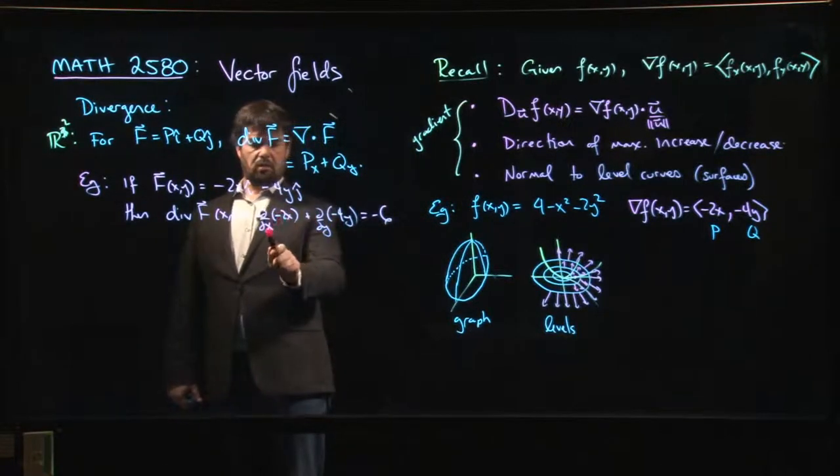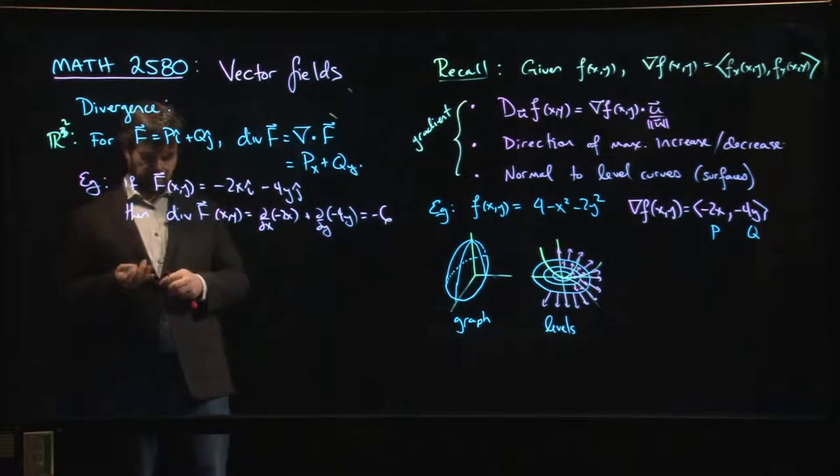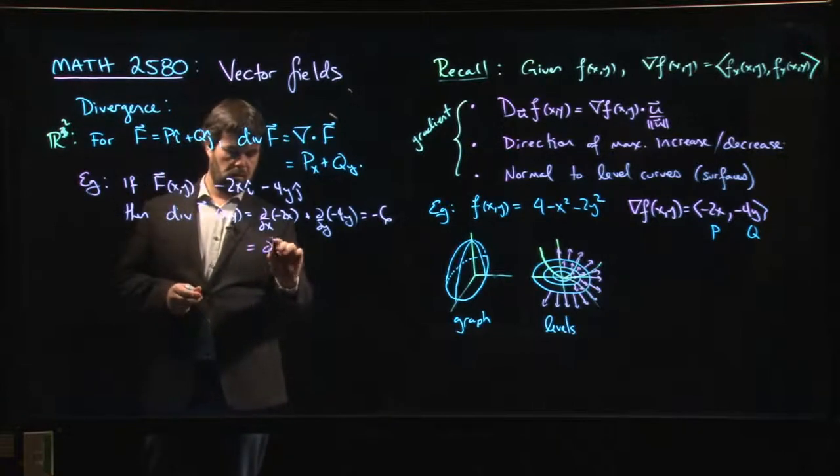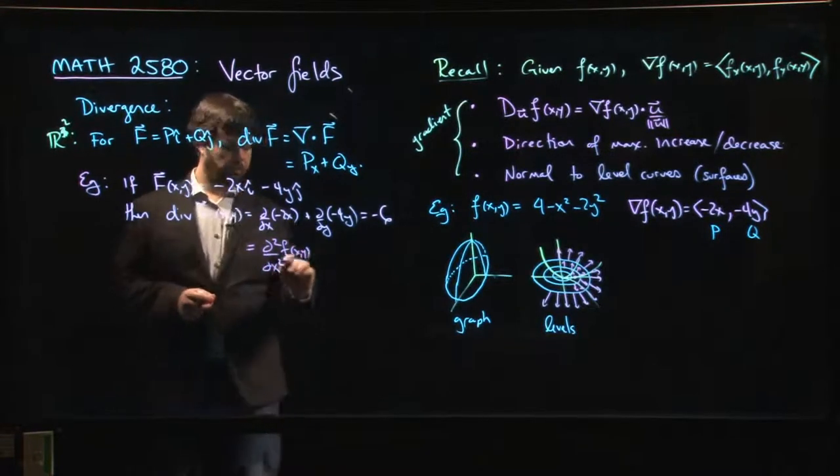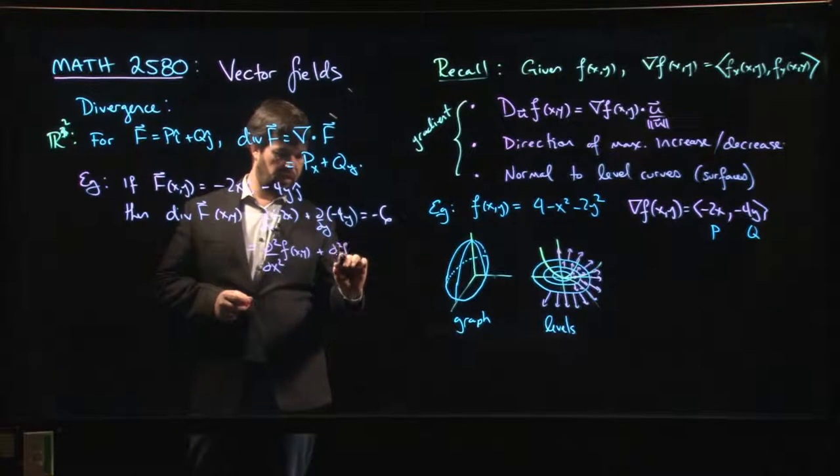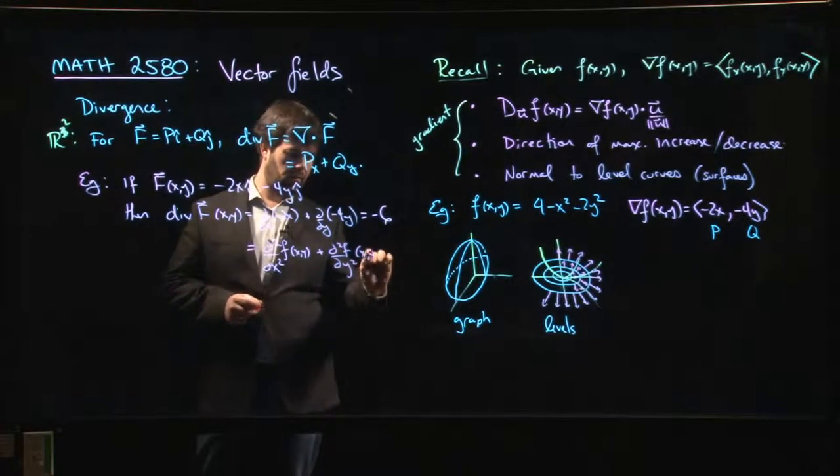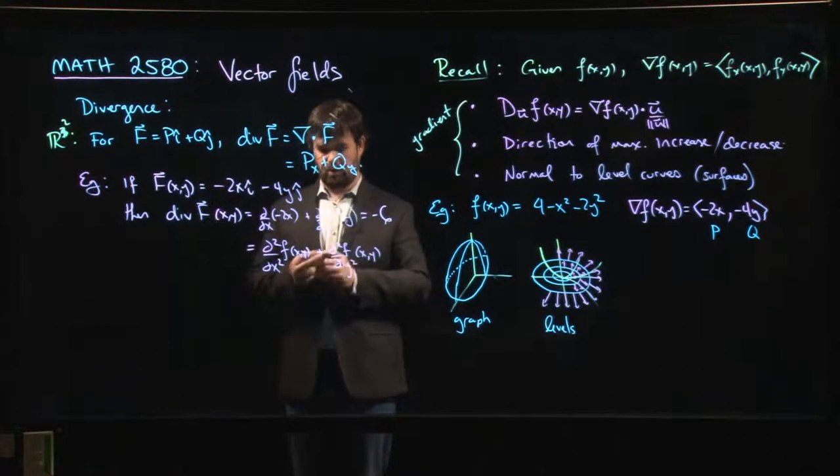So what this really is, what we've really done here in this particular case is we've done d squared f dx squared plus d squared f dy squared. And we got this answer of minus 6.